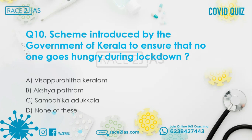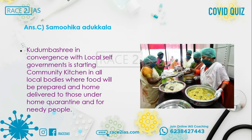Question number 10: Which scheme was introduced by the Government of Kerala to ensure that no one goes hungry during lockdown? Option A: Visapirahida Keralam. Option B: Achaya Ghatram. Option C: Samudayika Adukkala. Option D: None of these. The right answer is Option C, Samudayika Adukkala. Kudumbashree, in convergence with local self-governments, is starting community kitchens in all local bodies where food will be prepared and home-delivered to those under home quarantine and for needy people.